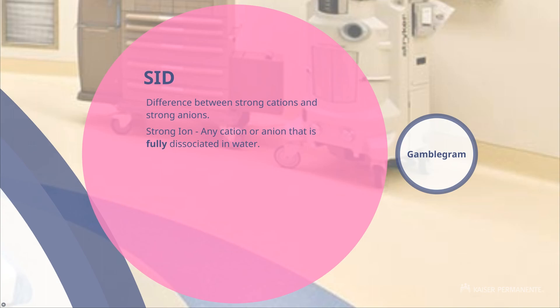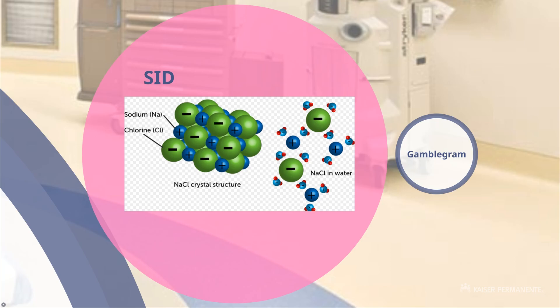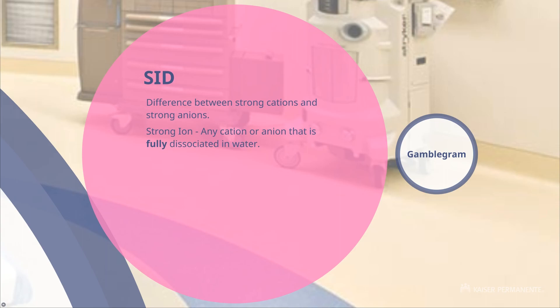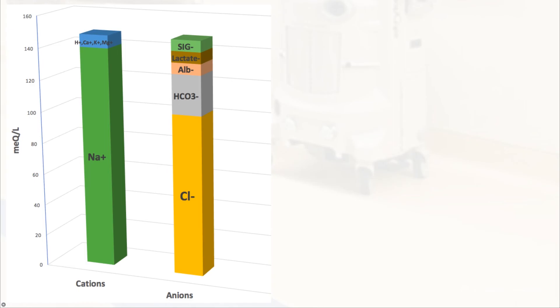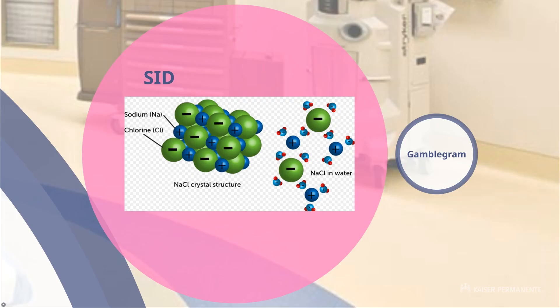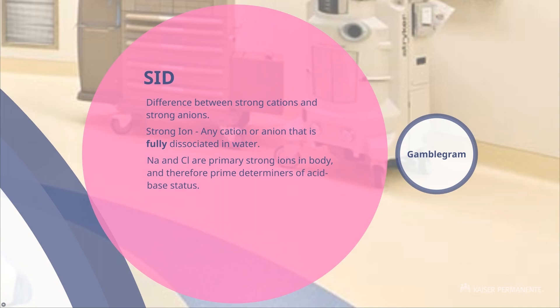Strong ion difference is calculated by taking the strong cations in your body and subtracting the strong anions. A strong ion is anything that, when put in water, totally dissociates — table salt is an example: sodium floats by itself, chloride floats by itself, nothing is attached. Sodium is the most abundant positively charged strong ion in our body; chloride is the most abundant negatively charged ion. Therefore they are the key determinants of acid-base status in terms of strong ion difference. The formula is simply: sodium minus chloride. Normal sodium is about 140, normal chloride is 102, so our normal strong ion difference is 38.